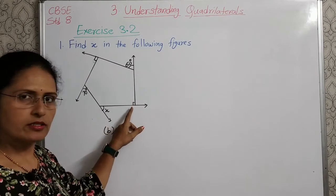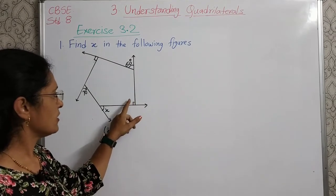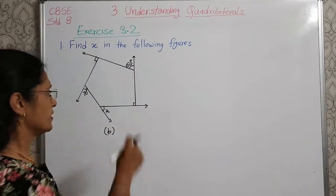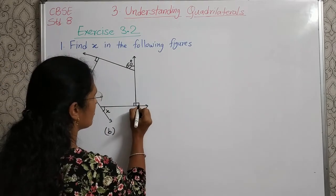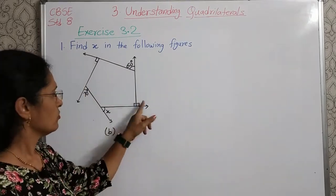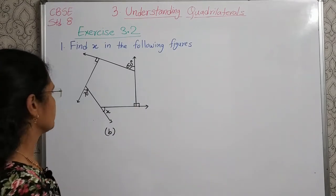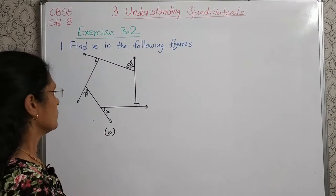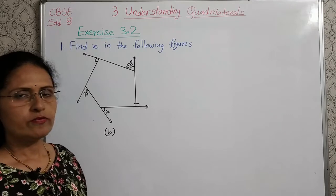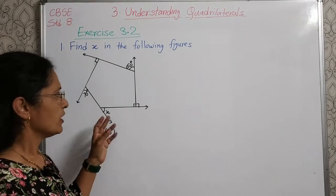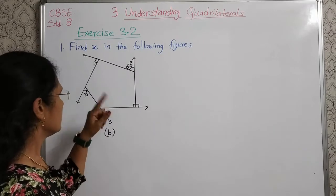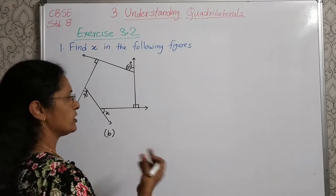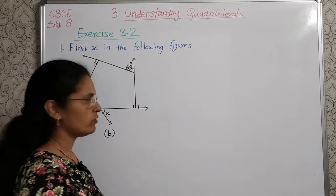Here the interior angle given is 90 degrees. But if the interior angle is 90°, it means the exterior angle is also 90° because this side is perpendicular to the other side — so this is a perpendicular. Therefore both the angles on either side of that line are 90° each. We have to find the measure of angle x. The sum of all the exterior angles of any polygon is 360°, so the sum of all 5 exterior angles equals 360°.